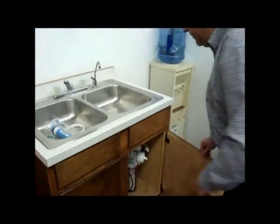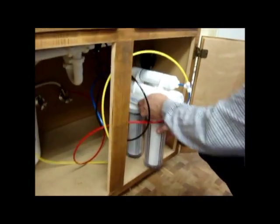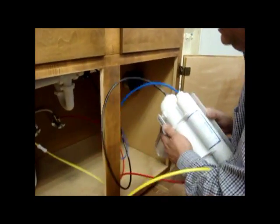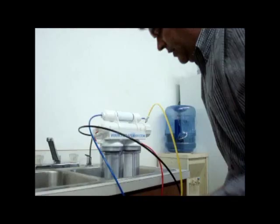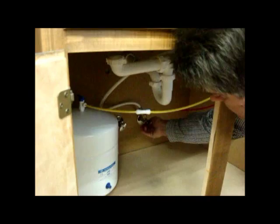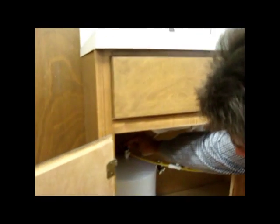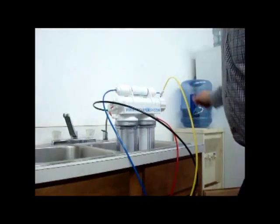First thing to do is find your RO system. In this one we have made it available with long enough lines to put in our sink. We'll turn off the water to the RO and from the holding tank. That way we won't get an extra shower today.